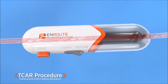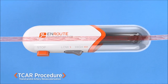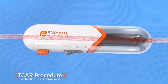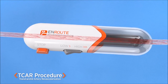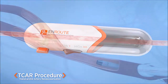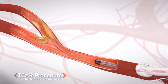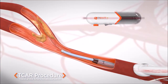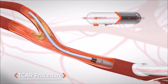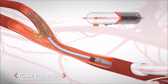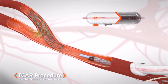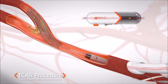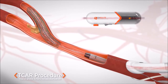The EnRoute transcarotid neural protection system provides operator control over the blood flow rate throughout the procedure. With flow reversal established, the conformable EnRoute transcarotid stent is placed to stabilize the plaque against the wall of the artery and minimize the potential for a future stroke. Balloon catheters can also be used to further expand the stent when appropriate.